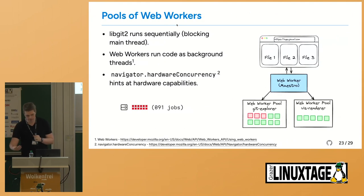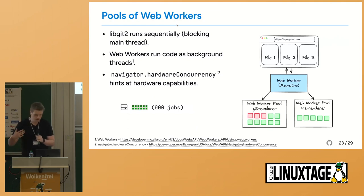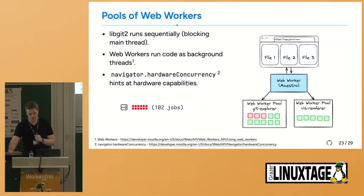We introduced pools of WebWorkers for different purposes. One pool is for the Git exploration part, and the other is for rendering and creating images. Both are administered via a single WebWorker we call Maestro, who is responsible for all state management and file selection, reporting back to the main view — essentially just a view layer. We want to keep as much work as possible off the main thread so it doesn't lag or feel clunky to the user.